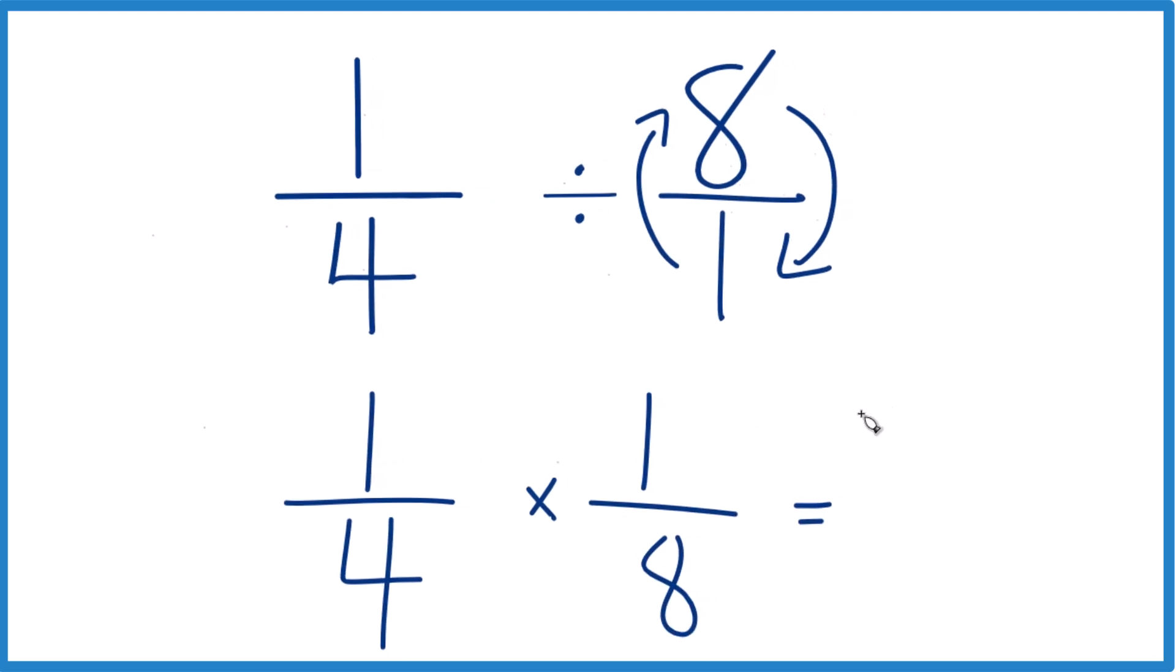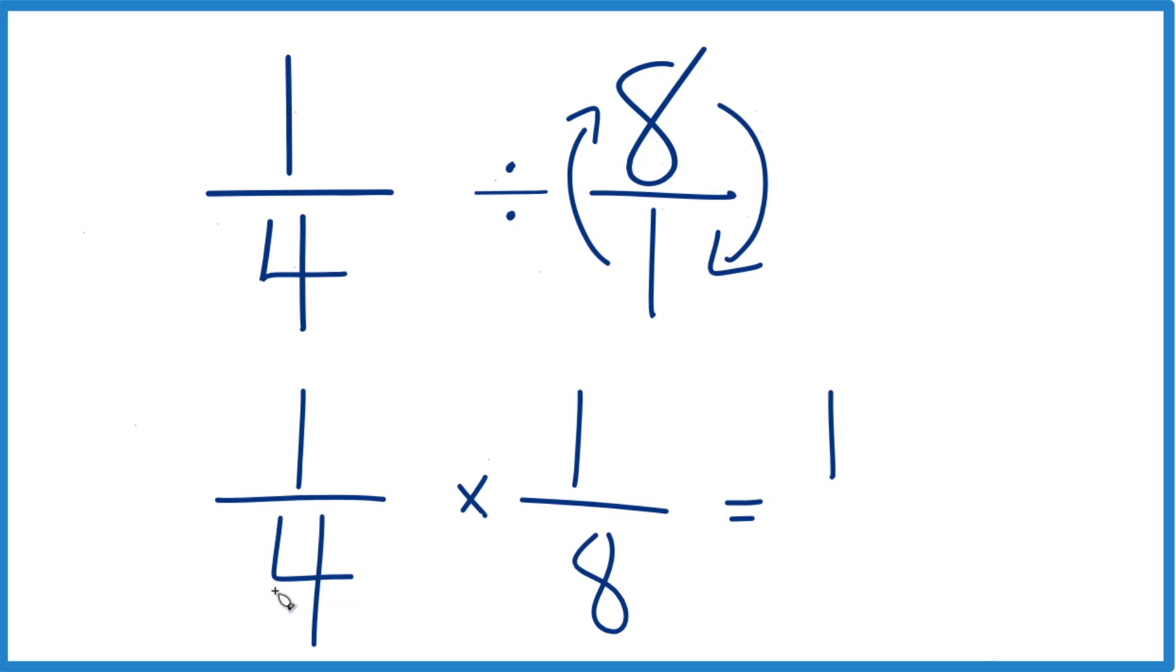Then with fractions, we multiply the numerators. 1 times 1, that's 1. Then the denominators. 4 times 8, that's 32.